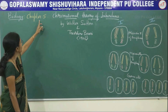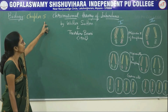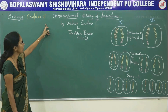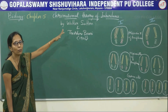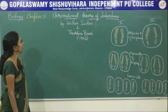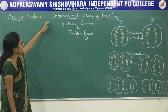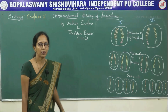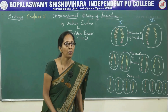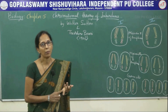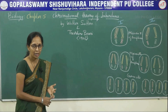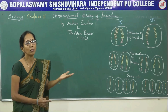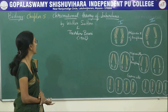I am dealing with chapter number 5, that is Inheritance of Variations and Theory. In the previous sessions, we already studied a few important points: monohybrid cross, dihybrid cross, incomplete dominance, and some technical terms.